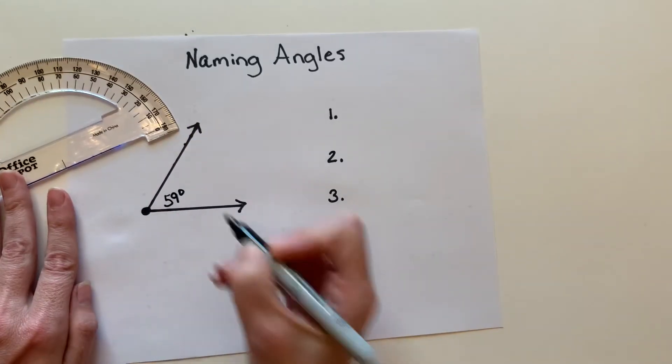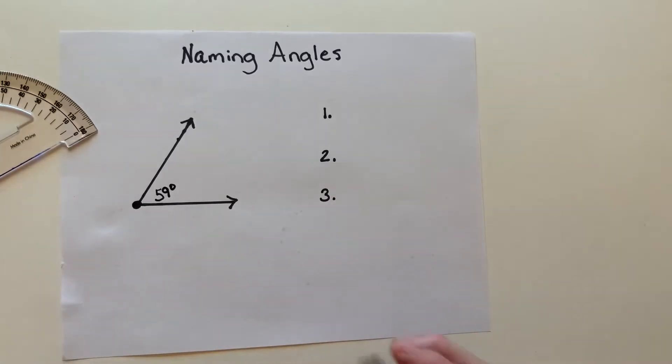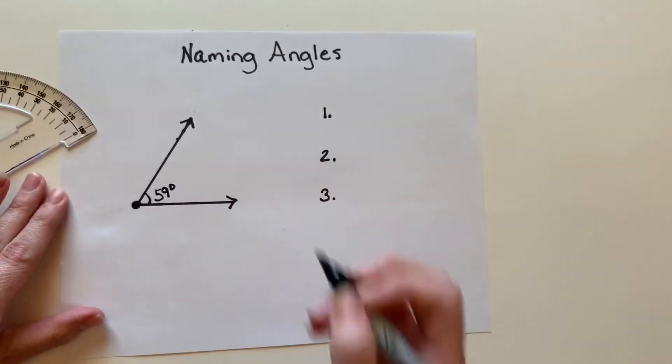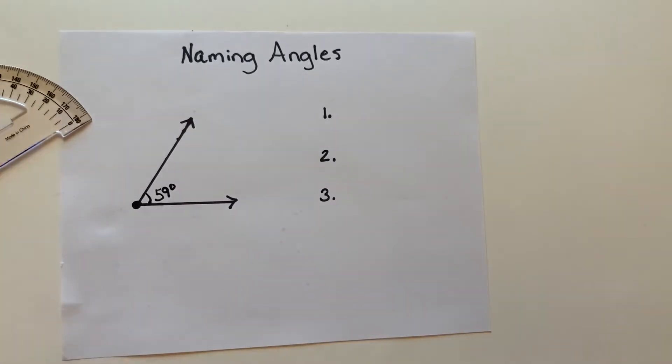So we're going to label this 59 degrees, but I want to know what is the name of this angle right here. Most of the time angles are named through letters.